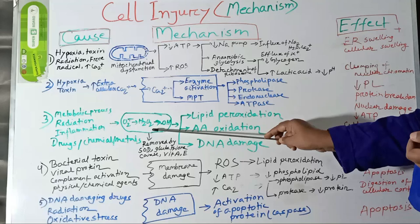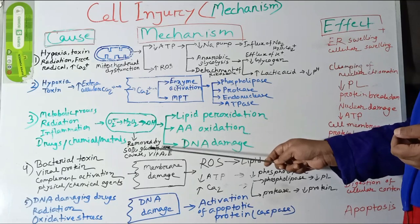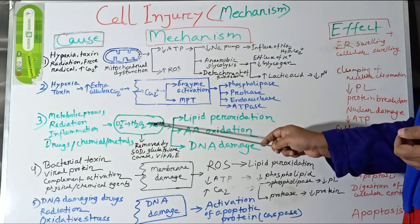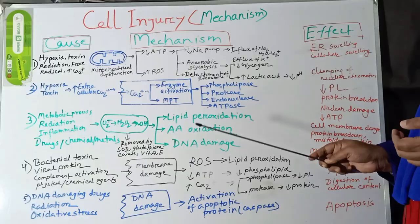Normally, free radicals are removed by the cellular scavenging apparatus such as superoxide dismutase, catalase, and glutathione peroxidase. Vitamins A, E, and ascorbic acid also act as antioxidants that remove free radicals. The biochemical alterations caused by free radicals include lipid peroxidation of cell membranes, oxidation of amino acids, and DNA damage. Amino acid oxidation causes protein breakdown and accumulation of misfolded proteins. Cross-linking of DNA strands causes mutations.